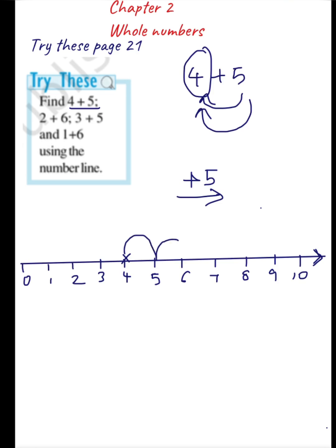So 1, 2, 3, 4, 5 — I have moved 5 steps to the right and reached 9. The answer for this question is 9, that is 4 plus 5 equals 9. I started from 4 and moved 5 steps towards the right and reached 9.